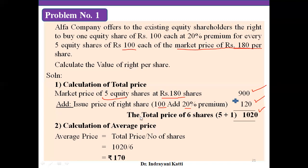Step 2 — calculation of average price. Average price equals total price divided by number of shares. Total price is Rs.1,020 divided by 6 — that is 5 existing shares plus 1 right share. The average price of each share is Rs.170.